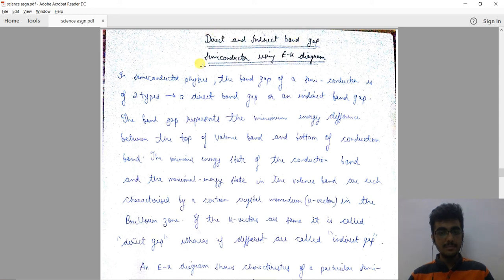We are going to talk about direct and indirect band gap semiconductors using E-K diagrams. In semiconductor physics, the band gap of a semiconductor is of two types: a direct band gap or an indirect band gap.